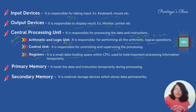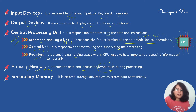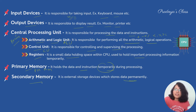For storage we have primary memory, also called main memory. It is used to hold data and instructions temporarily. As main memory holds data temporarily, we need permanent storage — for that we have secondary memory. There are different types of secondary memory that we are going to study in detail.